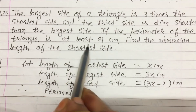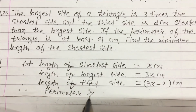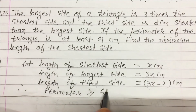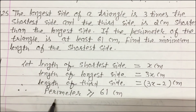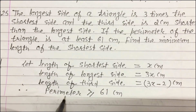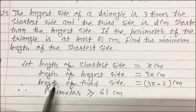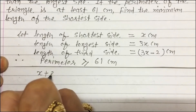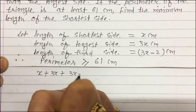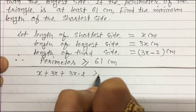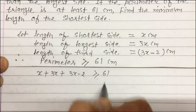Since it is 'at least,' apply the ≥ sign: perimeter ≥ 61 cm. The perimeter means the sum of all sides of the triangle: x + 3x + (3x − 2) ≥ 61.